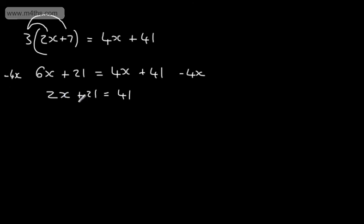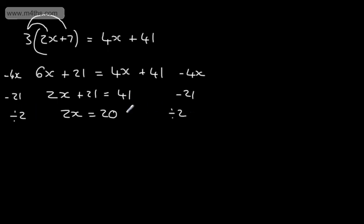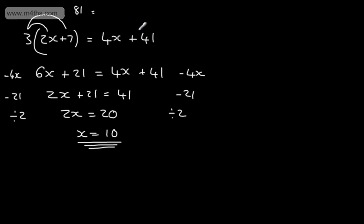I need to subtract 21 from both sides of the equation: that gives me 2x is equal to 20. Now I divide by 2 on both sides, so x is equal to 20 over 2, which is 10. Checking: 2 lots of 10 is 20, plus 7 gives 27, and 3 times 27 gives 81. On the right side, 4 times 10 is 40, and 40 plus 41 is 81. So this is the correct answer — we've solved an equation with brackets.